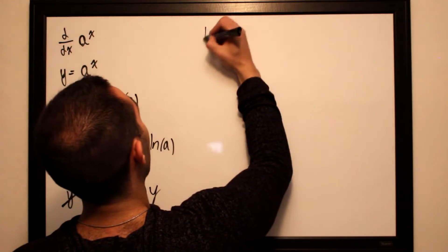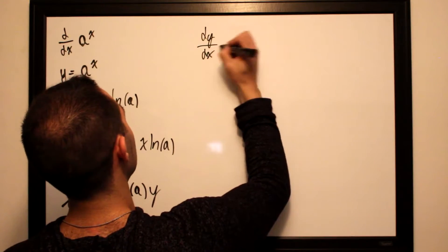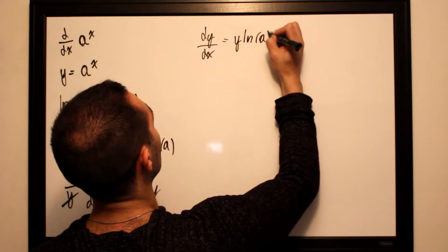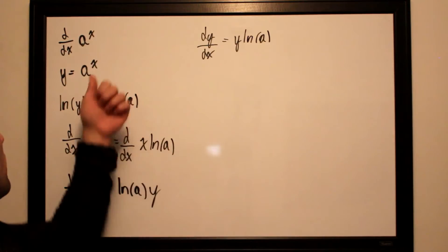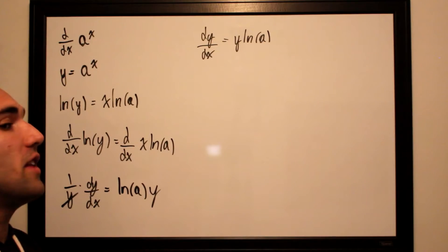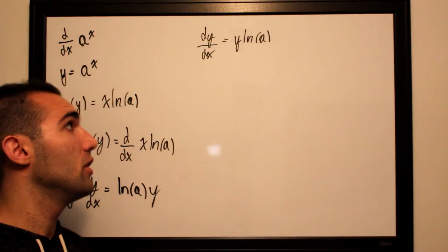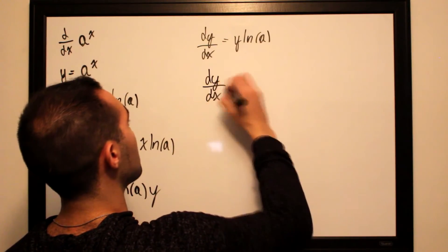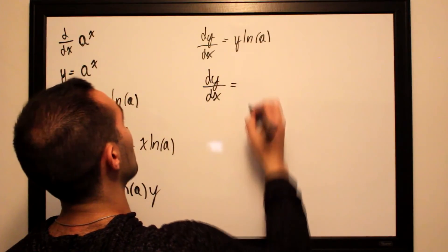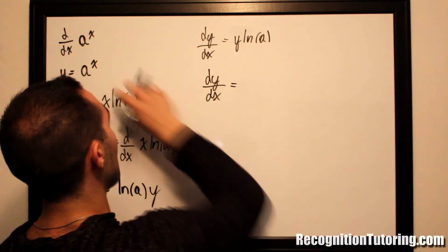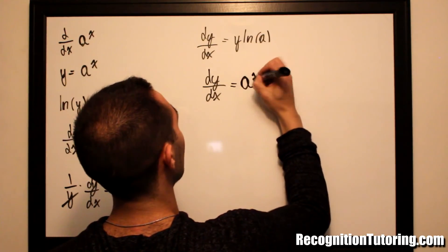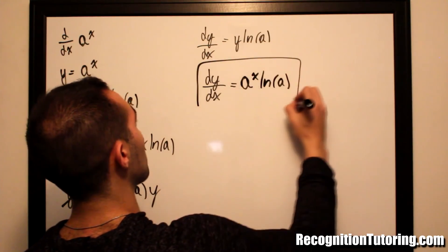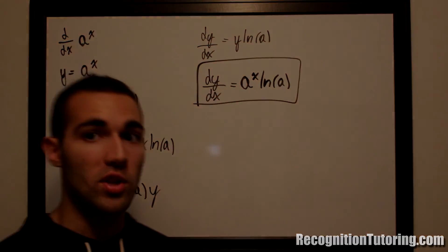So dy/dx equals y times ln(a). But if we look over here, y is essentially a to the x, which is our starting function. So the derivative of a to the x using implicit differentiation is y, substitute that in: a to the x times ln(a). And that's our derivative using implicit differentiation.